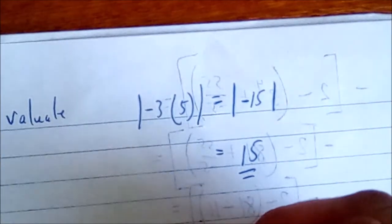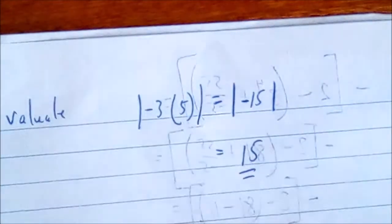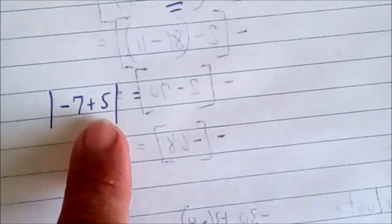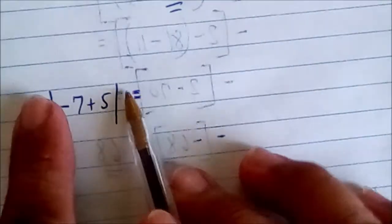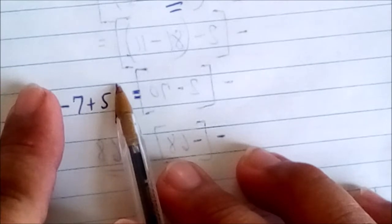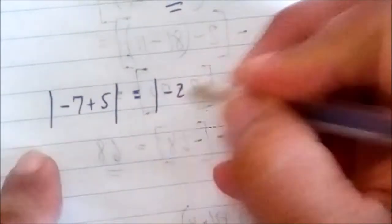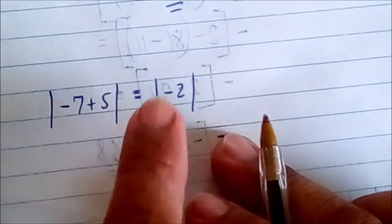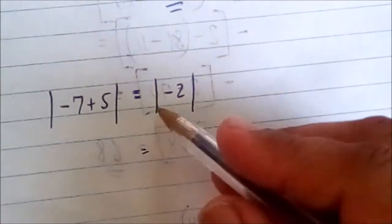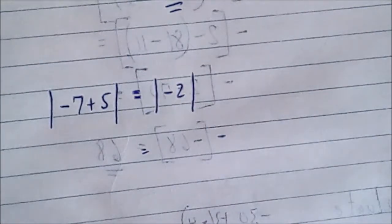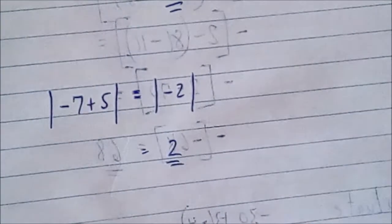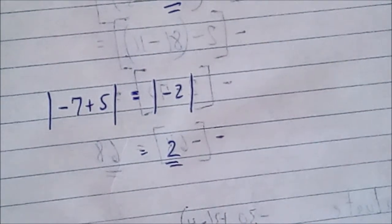Next example with addition: the absolute value of negative 7 plus 5. Inside the absolute value, negative 7 plus 5 gives us negative 2. The absolute value of negative 2 is simply 2. Done. The absolute value is not difficult — you just need to know how to work with it.